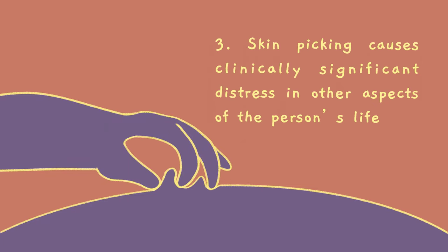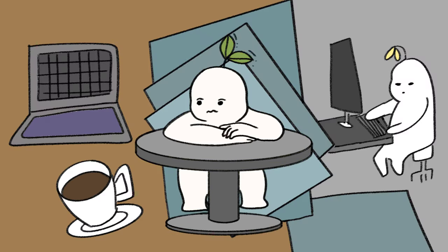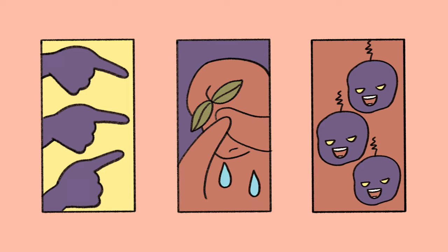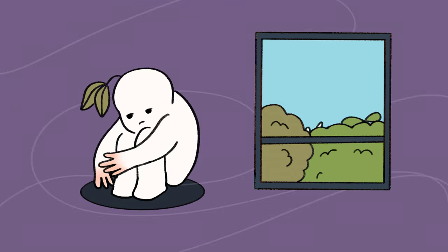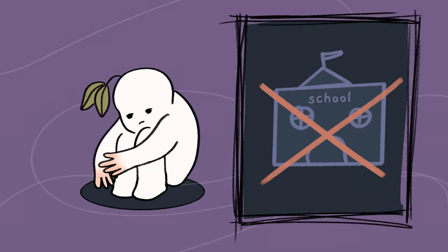Number three, skin picking causes clinically significant distress in other aspects of the person's life. Skin picking causes the person to experience distress in other areas that matter to them, such as their ability to focus in school or at a workplace. The person could feel shame, embarrassment, or humiliation as a result of the way that they act. Examples of clinically significant distress can include avoiding all forms of social contact because they worry about what others might think about them picking at their skin in public, or avoiding classes because they're worried about not being able to resist the urge to pick their skin in front of other students.